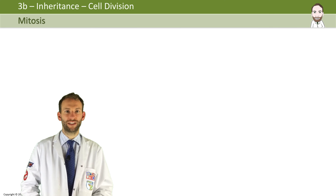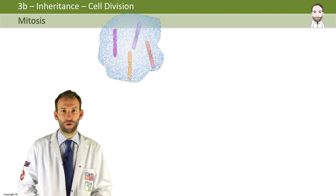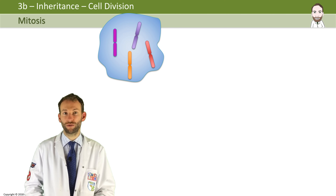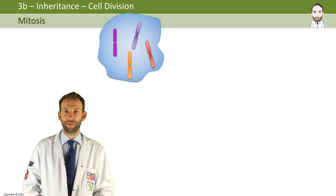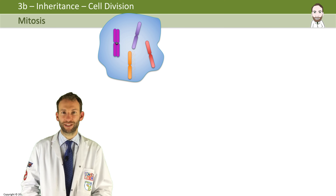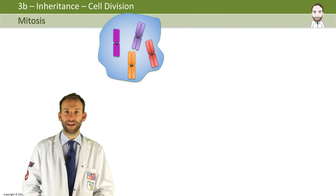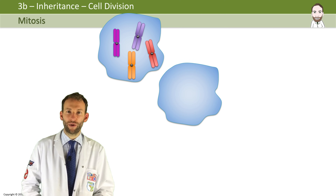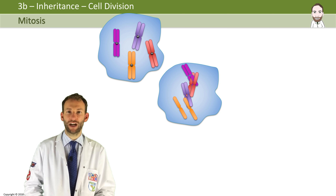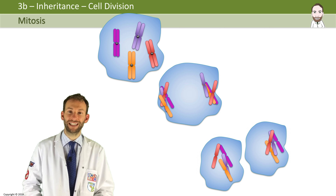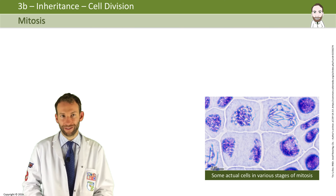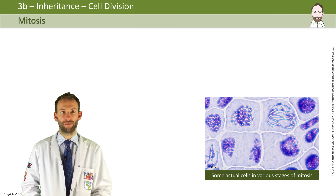We can show that on this diagram here, where we've got four chromosomes — we could do all 46, but that would make the diagram too complicated, so we just show four. They've all copied themselves into double chromosomes, then they line up down the middle of the cell, and we pull one copy of each chromosome to each side. Then the cell splits, and you can see two identical cells which are copies of the initial cell — four chromosomes in, two cells with four chromosomes in.